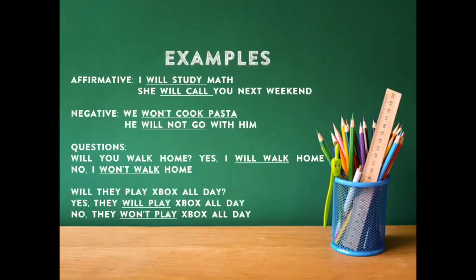For example, affirmative: I will study math. She will call you next weekend. Yo estudiaré matemáticas y ella te llamará el próximo fin de semana. Negative: We won't cook pasta. He will not go with him. Nosotros no cocinaremos pasta y él no irá con él. Questions: Will you walk home? Yes, I will walk home. No, I won't walk home. La primera pregunta: will you walk home? — ¿caminarás tú a casa? Sí, yo caminaré a casa, o no, yo no caminaré a casa.